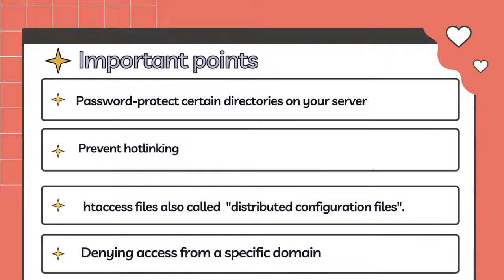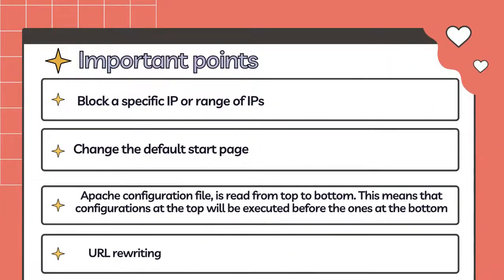13. Password protect certain directories on your server. 14. Prevent hotlinking. 15. .htaccess files, also called distributed configuration files. 16. Denying access from a specific domain. 17. Block a specific IP or range of IPs. 18. Change the default start page. 19. Apache configuration file.